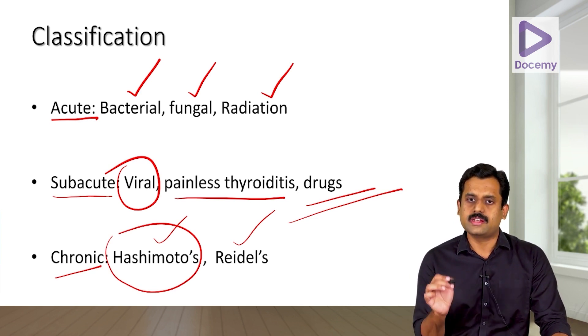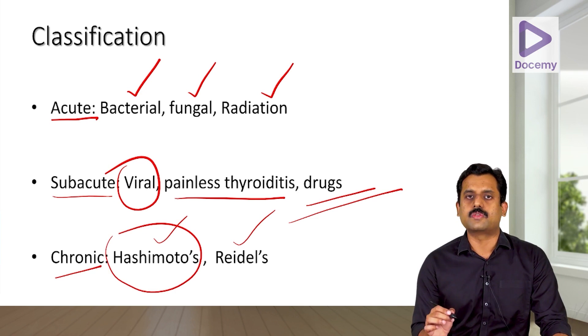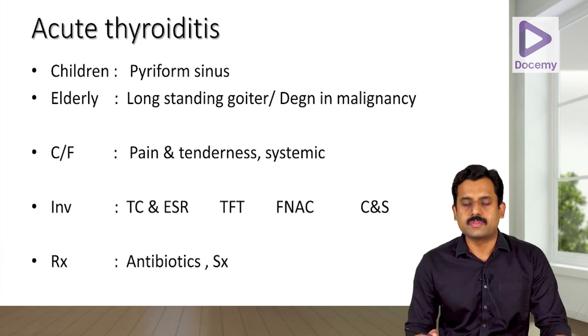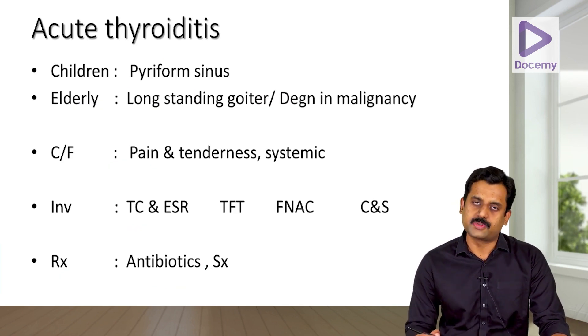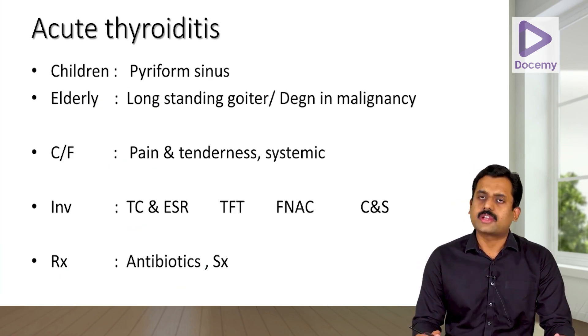Remember, Hashimoto's thyroiditis is the most common cause of thyroiditis all over the world, and it is also the most common cause of hypothyroidism. Now we will see what acute thyroiditis is.